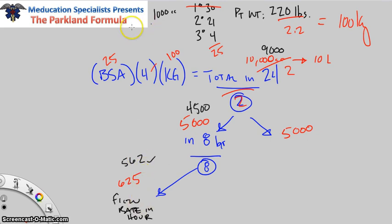All we're doing is you have three terms: body surface area, the number 4, and kilograms. Simple to remember. That gets you total in a 24 hour period. What do we do? Divide by 2, then divide by 8. And it's that simple.